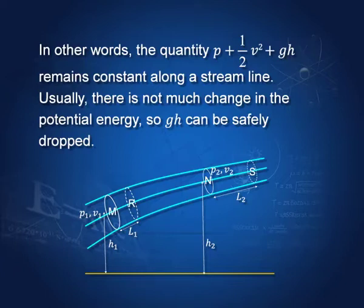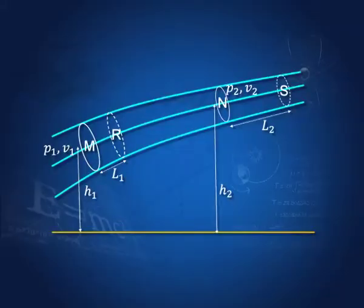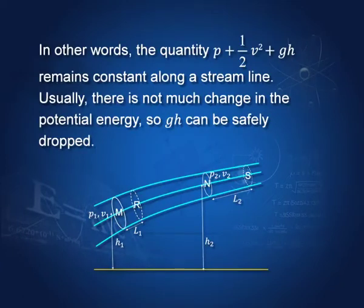We have P plus half v squared constant along a streamline. That means what? That if v increases, P has to decrease, or if v decreases, P has to increase. So along a streamline, as the fluid moves, if velocity becomes very large, pressure becomes very small or vice versa. This theorem is called Bernoulli's theorem, that P plus half v squared plus g H remains constant along a streamline.